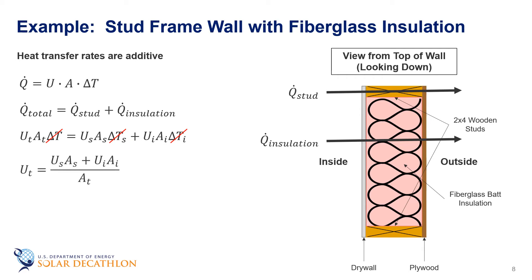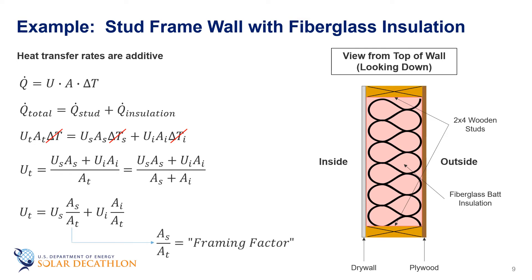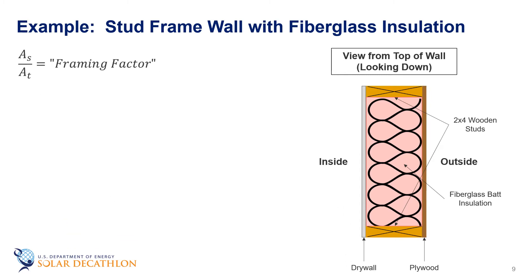Solving for U total, we get U times A for the stud plus U times A for the insulation over the total area of the wall, which is the area of the studs plus the area of the insulation. Simplifying this further, we can show this as U-stud times A-stud divided by A-total plus U-insulation times A-insulation divided by A-total. The ratio of A-stud to A-total is called the framing factor, or how much frame there is compared to the total area of the insulated wall. The remainder can be insulation.